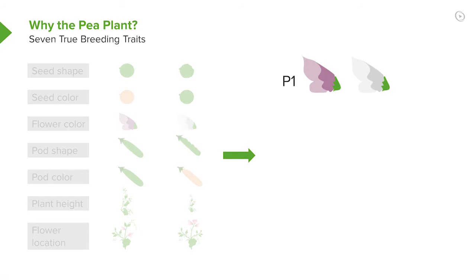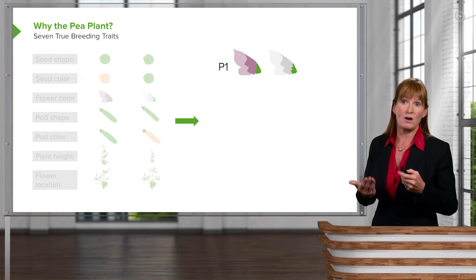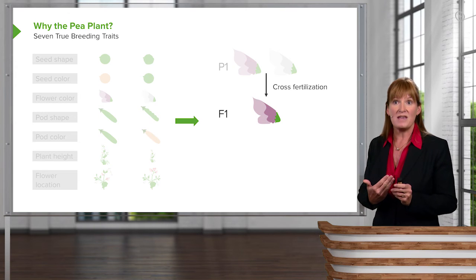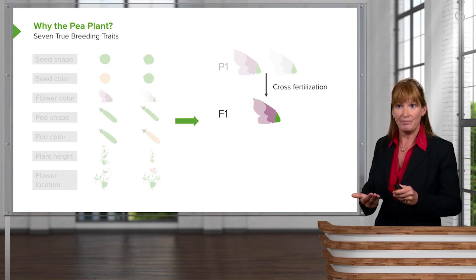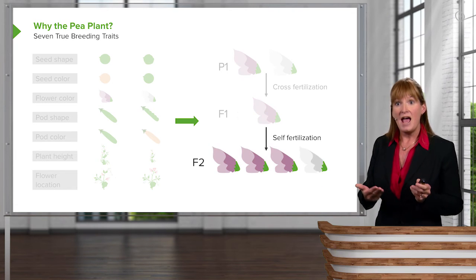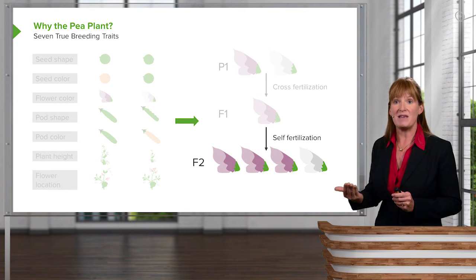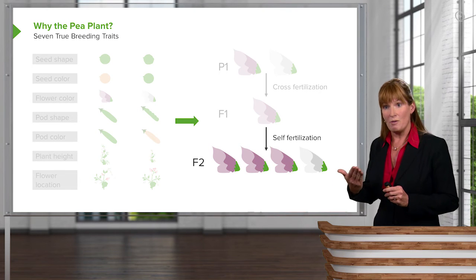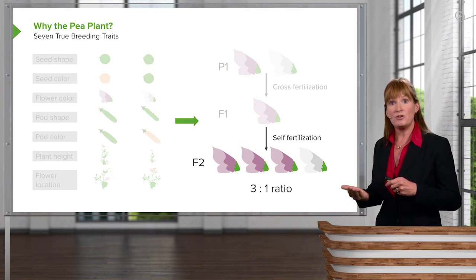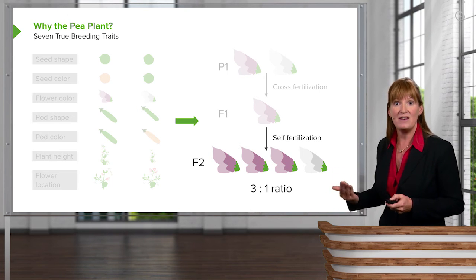In the parental generation, he would take true breeding parents — one that is true breeding purple and one that is true breeding white. By true breeding, we mean pure breeding; he would cross them repeatedly to make sure they were only purple and only white. He would cross those in what we call the F1 cross to produce an F1 generation. All of the F1 generation looked just like one of the parents. And when he self-fertilized the offspring from the F1 generation, they produced phenotypes where the parent phenotype that had gone missing showed up again. Whether he was dealing with round or wrinkled seeds or yellow or green seeds, the same pattern of inheritance was exhibited.